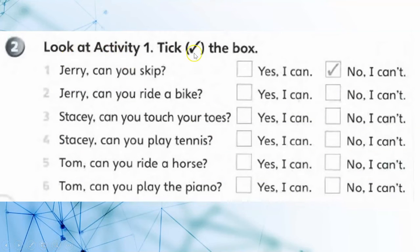Look at activity 1, tick the box. Jerry, can you skip? No, I can't. Jerry, can you ride the bike? Yes, I can.